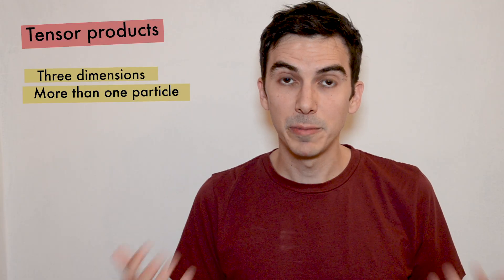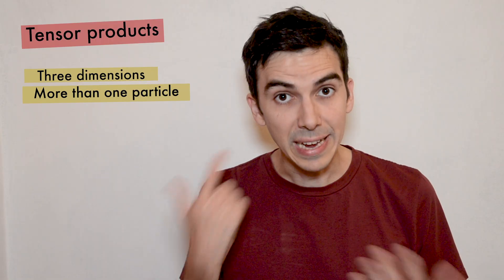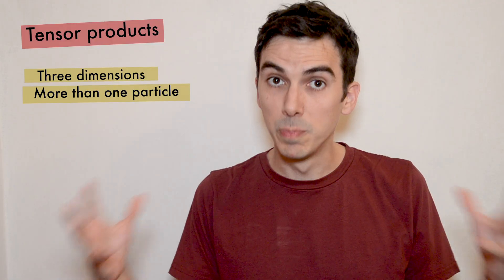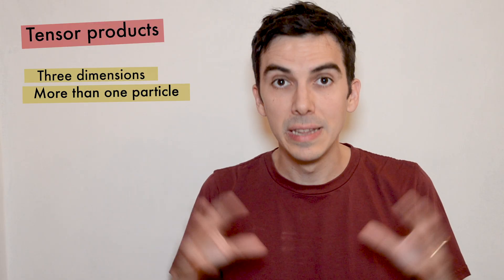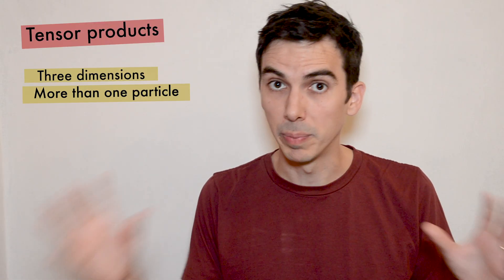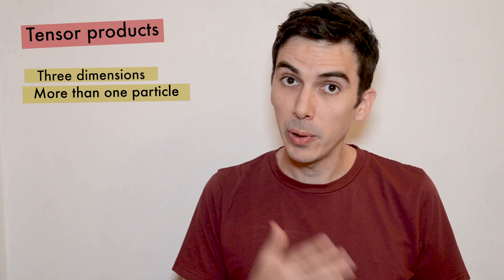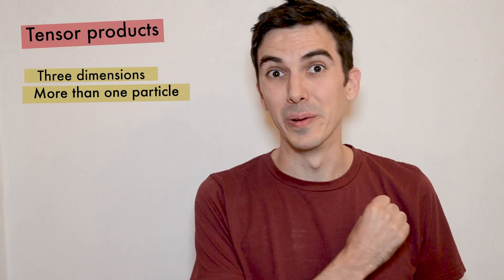As an example, consider a first particle described by a state space with associated bases, operators and so on. Then imagine a second particle with the associated mathematical construction. Now imagine that our system has both particles in it. In this case, how is the state space of the combined system related to the individual state spaces of the two particles? The answer relies on a mathematical formalism known as the tensor product of vector spaces, and this is what we'll cover today. So let's go!